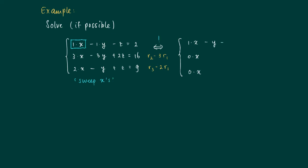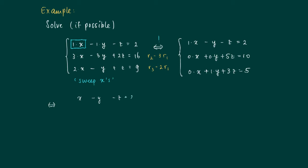The system we end up with has zeros in the second and third rows as coefficients for x. For the second row, after subtracting 3 times row 1, the y coefficient becomes 0 minus 3 times minus 1. Continuing, the third row ends up with 0 times x plus 1 times y plus 3 times z equals 5. The system is now simpler: x minus y minus z equals 2, 5z equals 10, and y plus 3z equals 5.